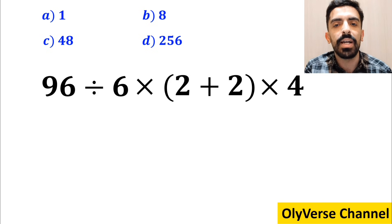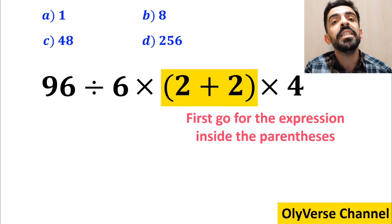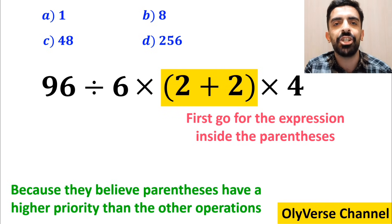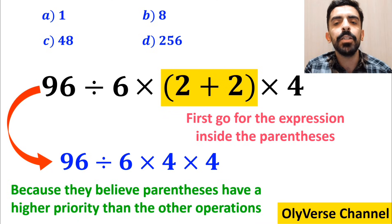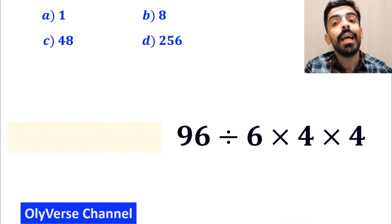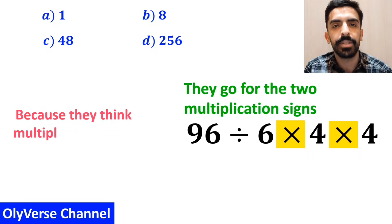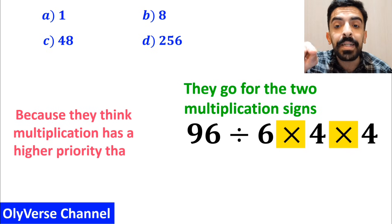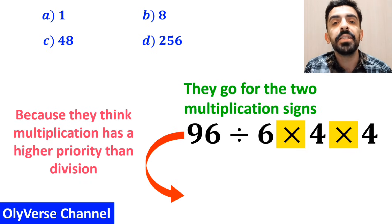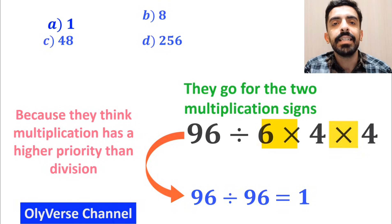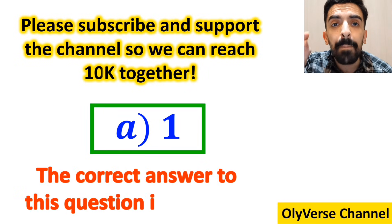Many people, when trying to solve this question, first go for the expression inside the parenthesis because they believe parentheses have a higher priority than the other operations. So they simplify this expression to 96 divided by 6 times 4 and again times 4. In the next step they go for the two multiplication signs highlighted in yellow because they think multiplication has a higher priority than division. So instead of this expression they write 96 divided by 96, which finally gives them the answer 1, and they conclude that the correct answer is option A.